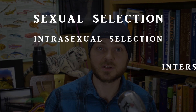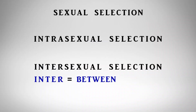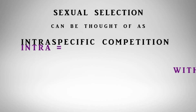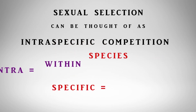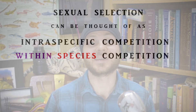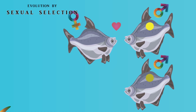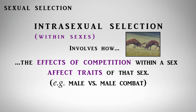Natural selection determines what traits are best suited for survivability in an environment to reach an age and opportunity to mate and have offspring, while sexual selection determines what traits are best suited for reproductive success when those mating opportunities arise. Sexual selection is often divided into two subcategories: intrasexual selection and intersexual selection, where inter means between and intra means within — so between sexes and within sexes. We could also refer to sexual selection as the processes of intraspecific competition, where intra means within and specific means a species. It's all a big competition within a species population to pass on genetic code. Intersexual selection is how the mating preferences of one sex affect the traits of the other sex, like a female choosing a male or vice versa.